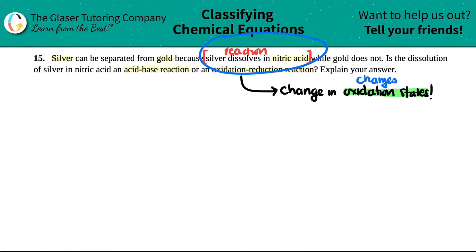So first, let's just see what's going on here. Silver is dissolving in nitric acid. So silver has to be reacting with nitric acid. Silver on the periodic table is Ag, plus nitric acid.